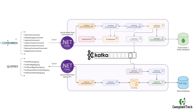Notice the different commands that the social media post command API will be able to handle, including a new post command which will be used to create a new social media post, an edit message command to update the message text of an existing social media post, and the like post command to like a social media post.